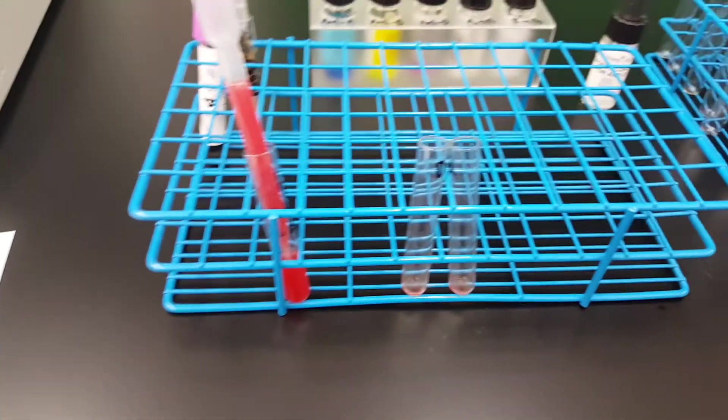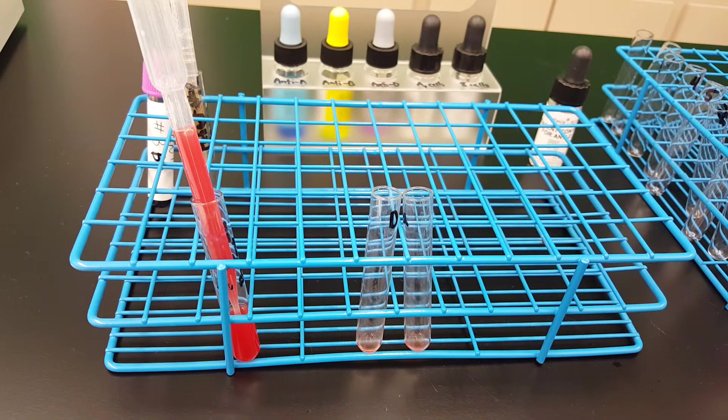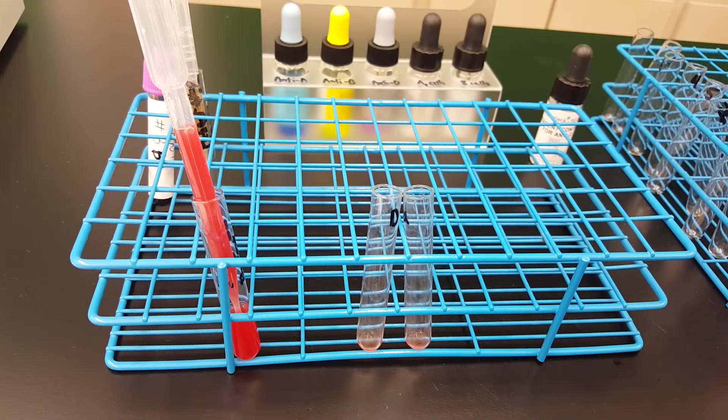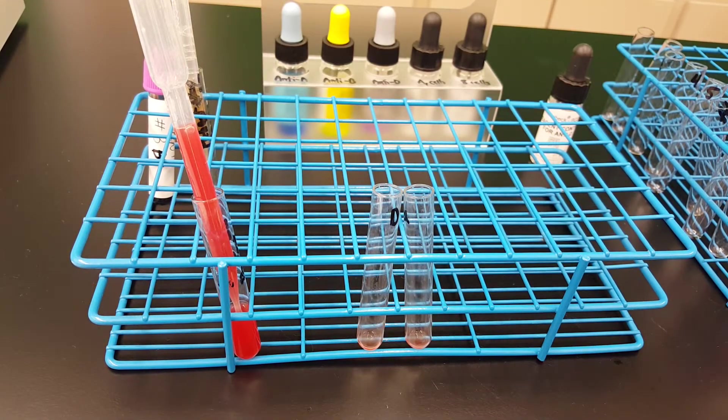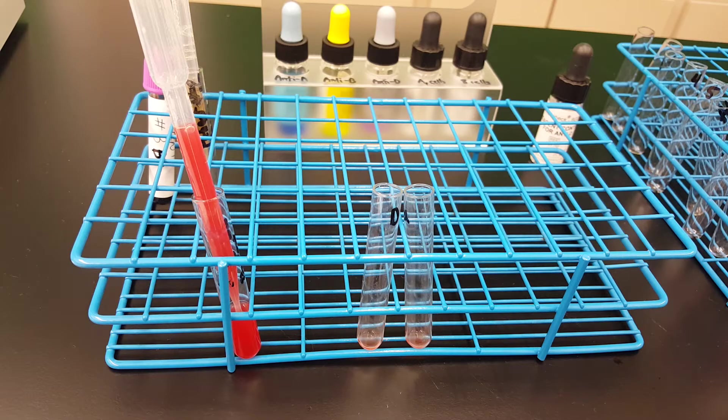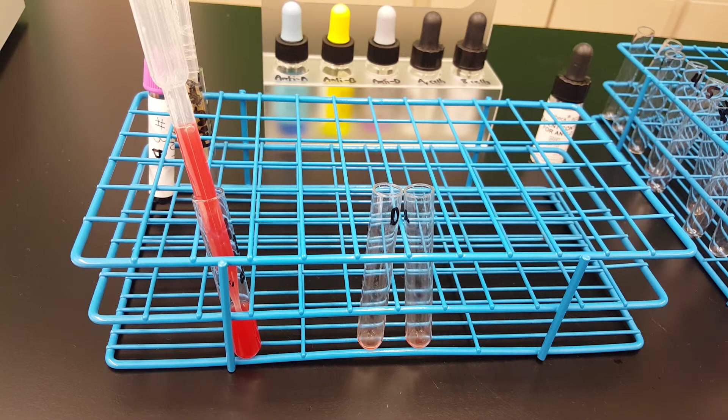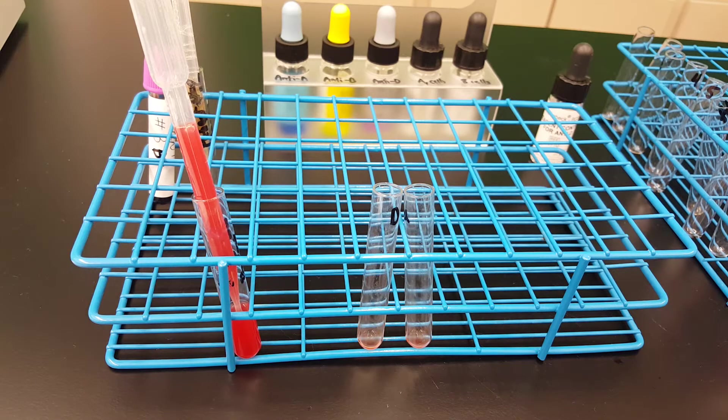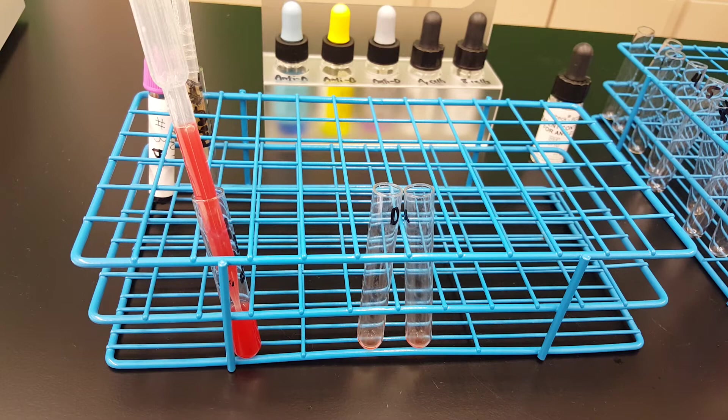So what we're going to do now is we're going to add check cells. Because if we add check cells and then we spin them down and there is a reaction, then that means that the AHG reagent was added because there would be bound antibody to the RBCs.